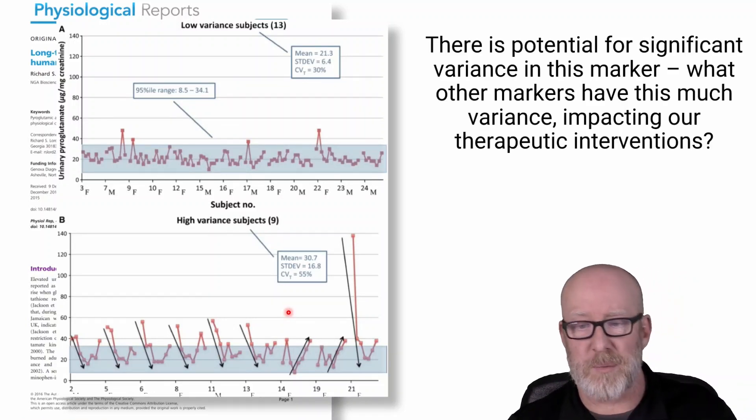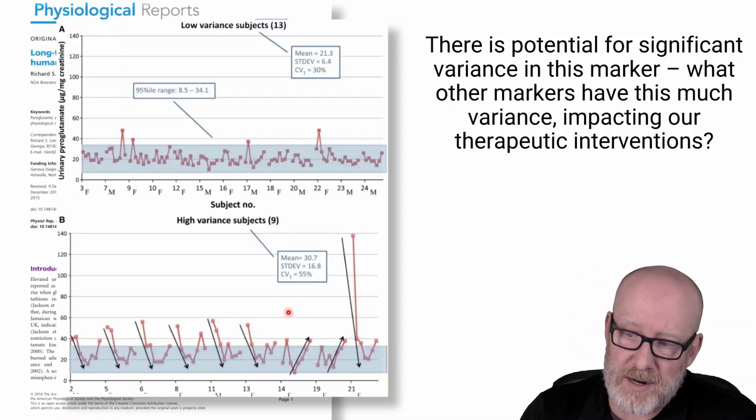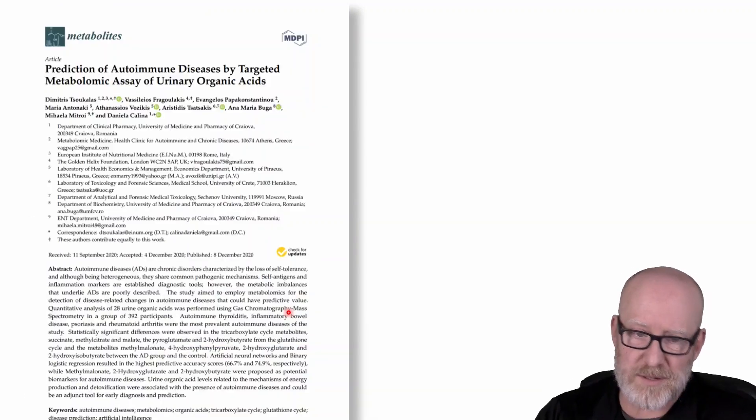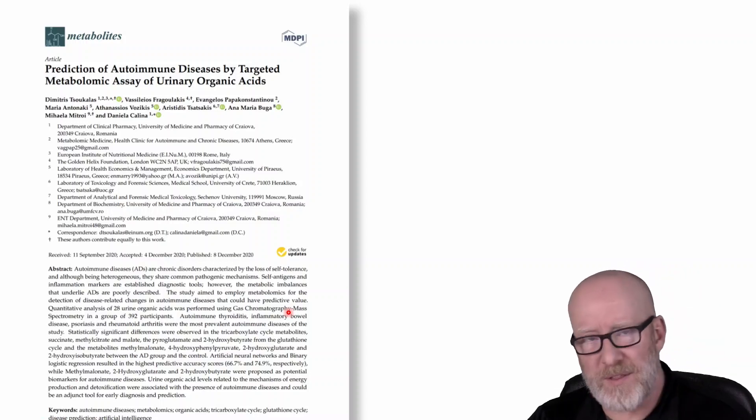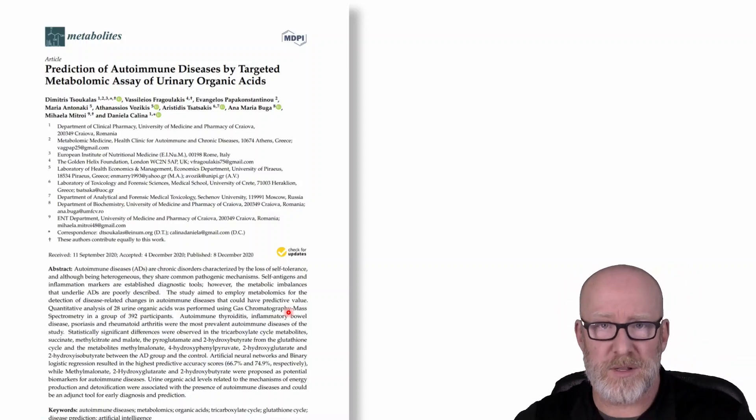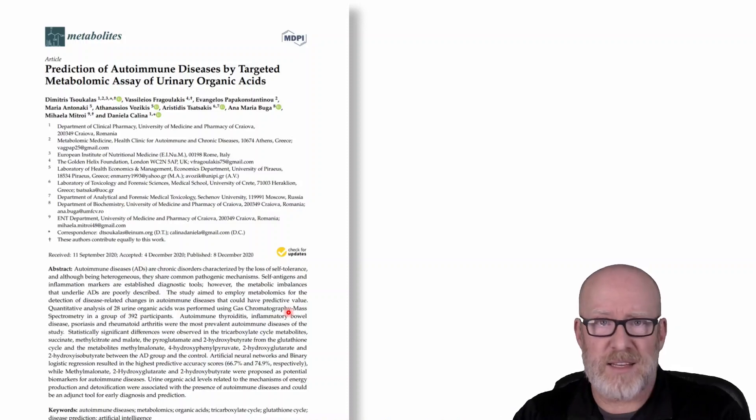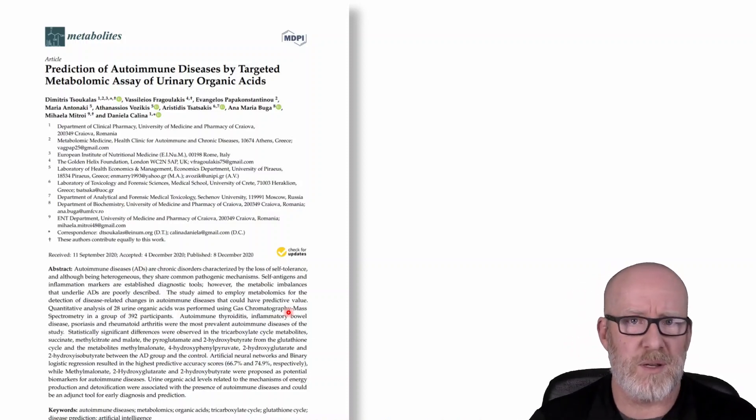So this is my words, not the paper. There is potential for significant variance in this marker. Then the question becomes, what other markers have this much variance in an organic acid test impacting our therapeutic interventions? While I'm on this marker of glutathione and the organic acid test, you've probably heard people saying that in this industry that autoimmunity, if anybody has that, you have to have glutathione. You must have it. Everybody drastically needs glutathione if you have an autoimmune condition.